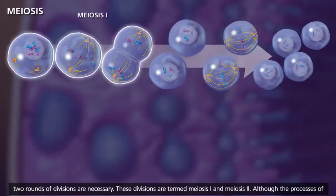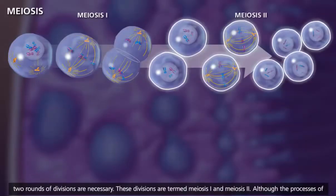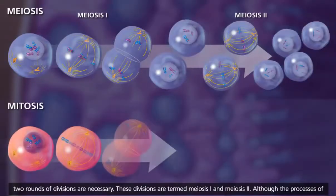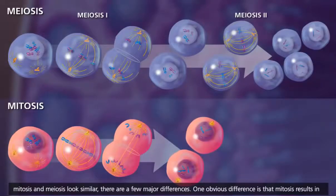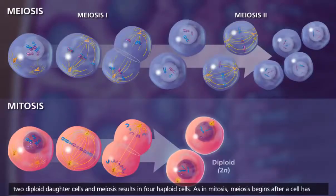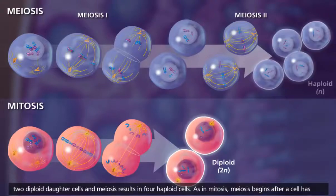These divisions are termed meiosis I and meiosis II. Although the processes of mitosis and meiosis look similar, there are a few major differences. One obvious difference is that mitosis results in two diploid daughter cells, and meiosis results in four haploid cells.